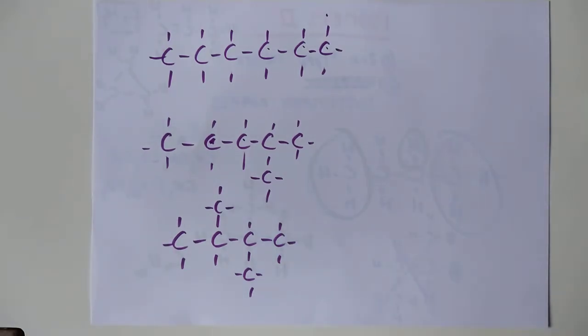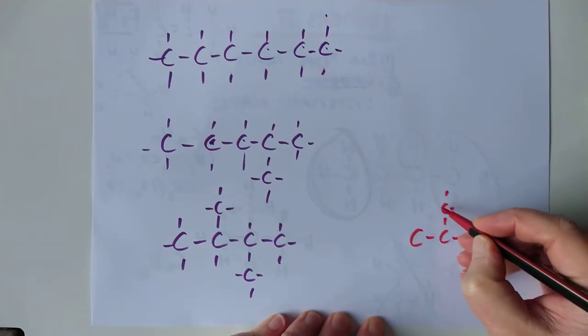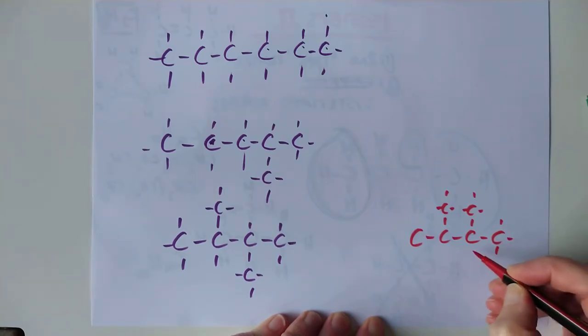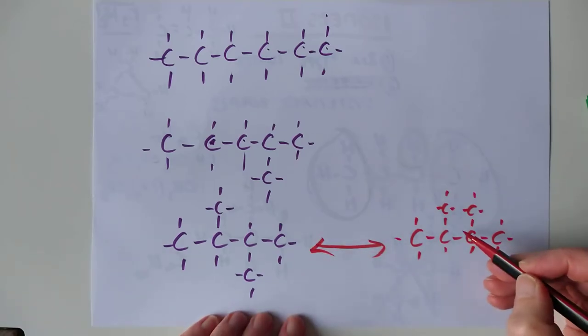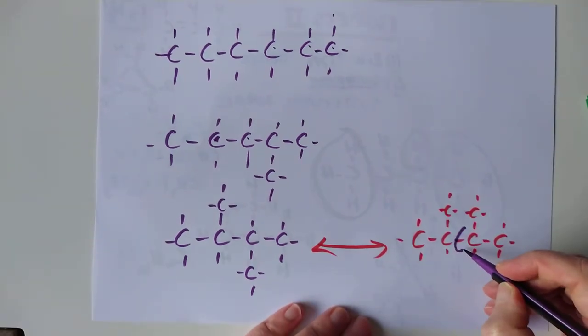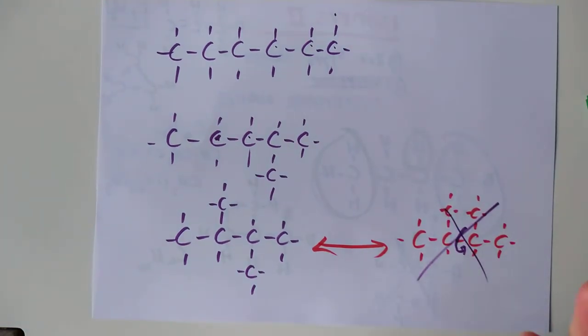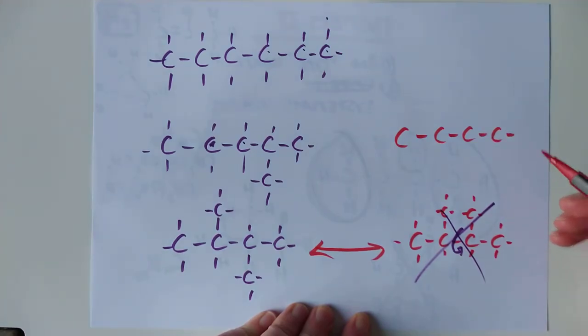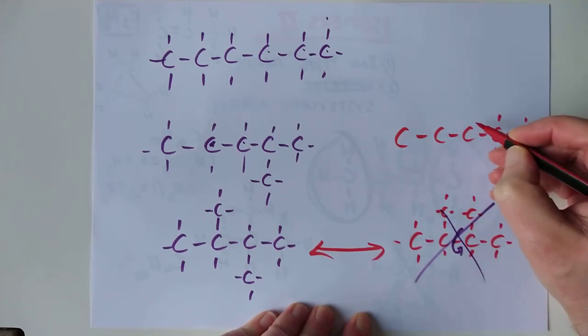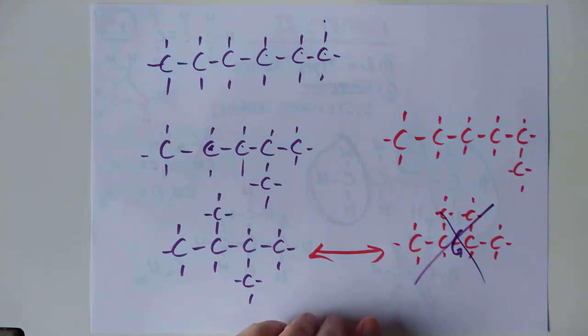In red here, I'll draw you one that is not a different isomer. This is exactly the same as this molecule. These are identical to each other. All I've done is rotate that middle bond. It's the same thing. So that is not an isomer.